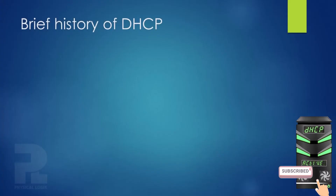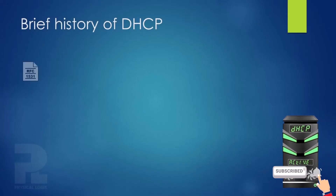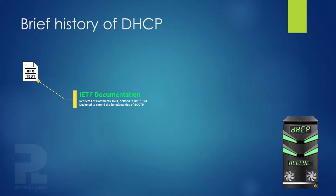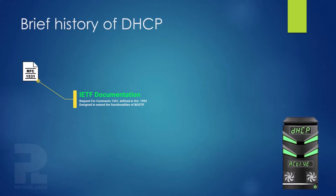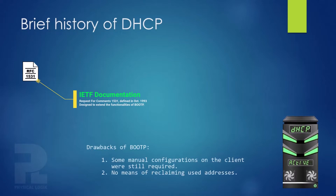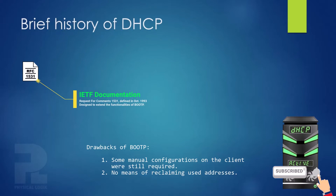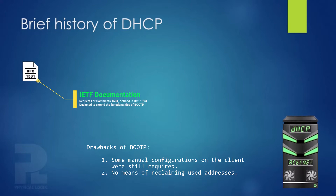DHCP was first defined in October 1993 in a document called RFC 1531 as an extension to the bootstrap protocol. The reason for this extension was that BootP required some manual configuration to be performed, since the protocol packets could not carry all the network parameters that may be required by the client. They also did not have any mechanism for reclaiming used IP addresses and hence did not promote optimal resource utilization on the network.